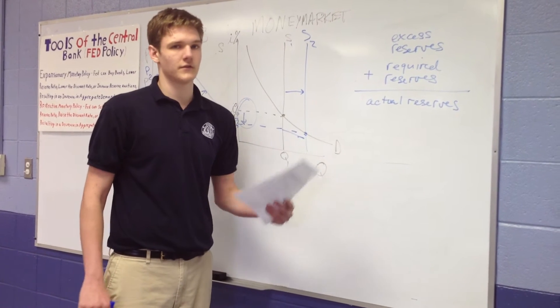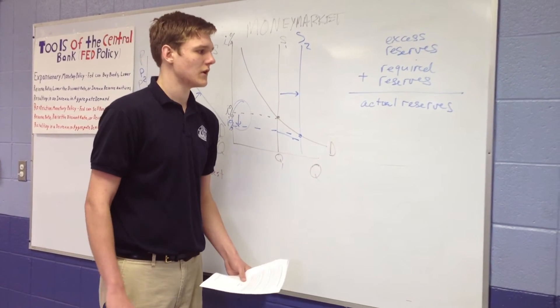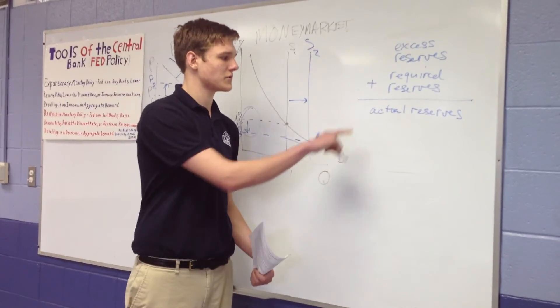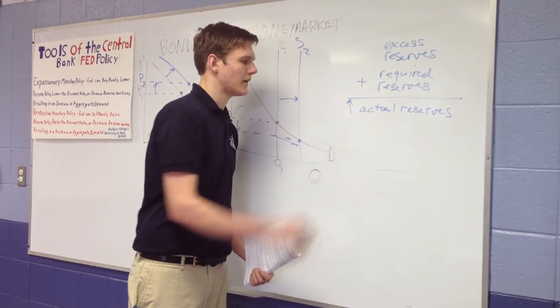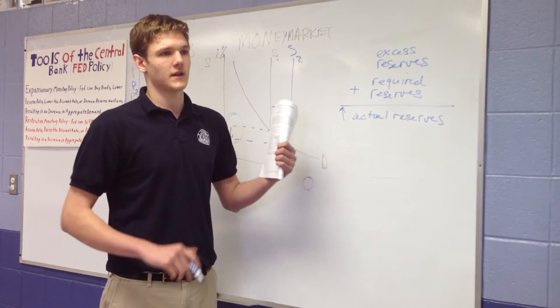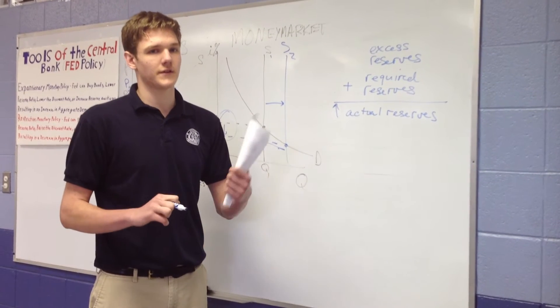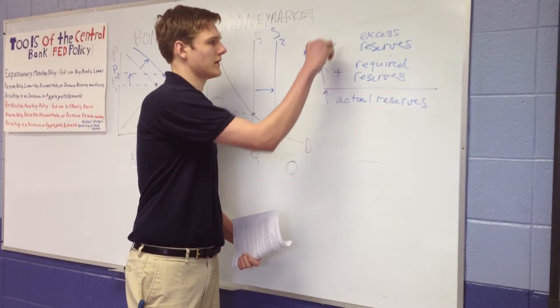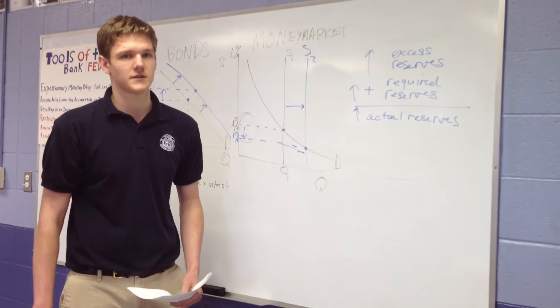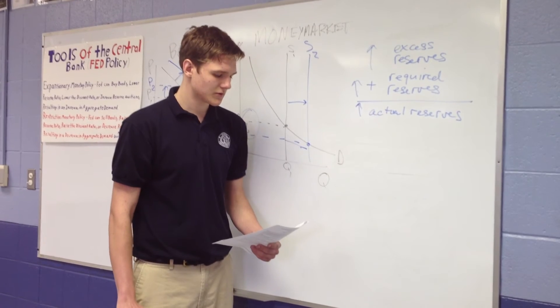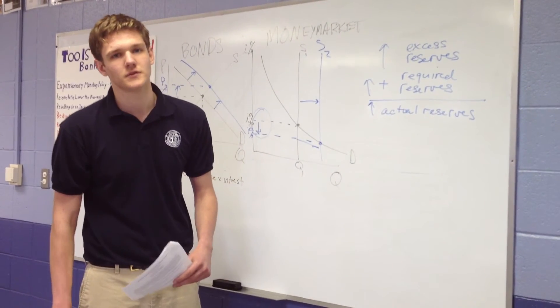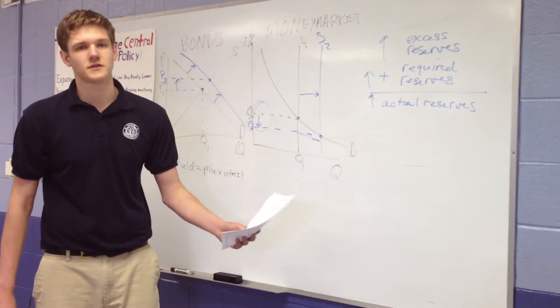So when the Fed bought bonds, they infused banks with money, so the actual reserves went up. And since the actual reserves went up, they had more money on reserve. They had to keep a constant percentage so the level of reserves increased, and they also had an increase in the excess reserves, but it was cut down by the percentage they had to keep away. So, just make sure that you remembered the question asked level of reserves, not percentage. So the level increases, and the percentage stays constant.